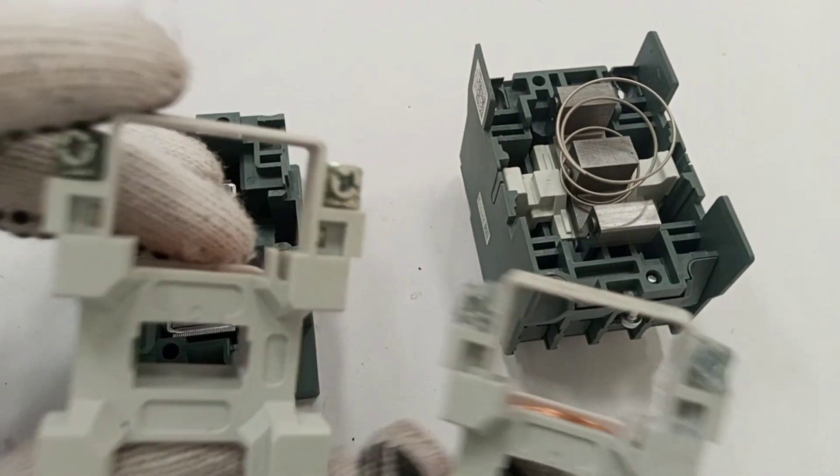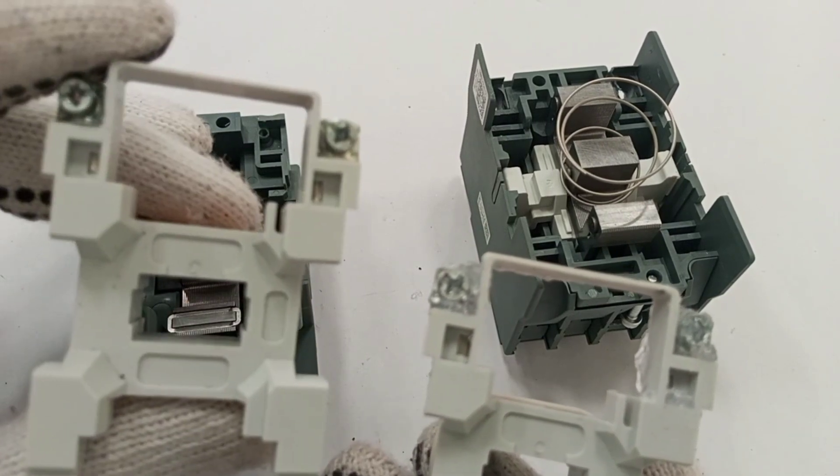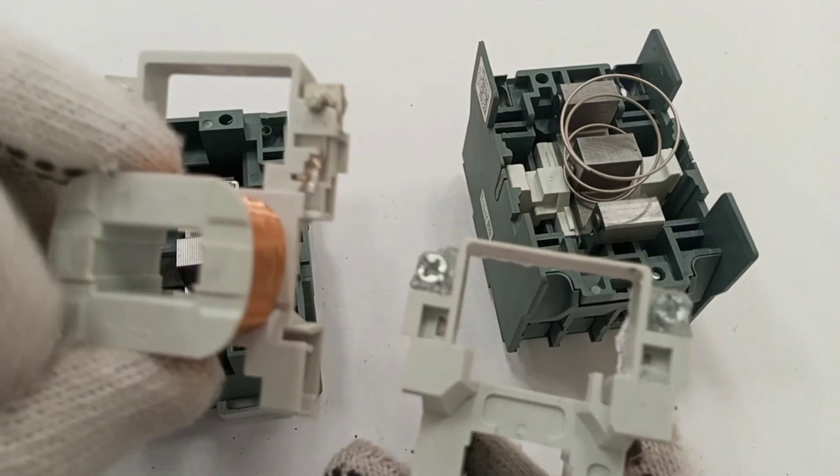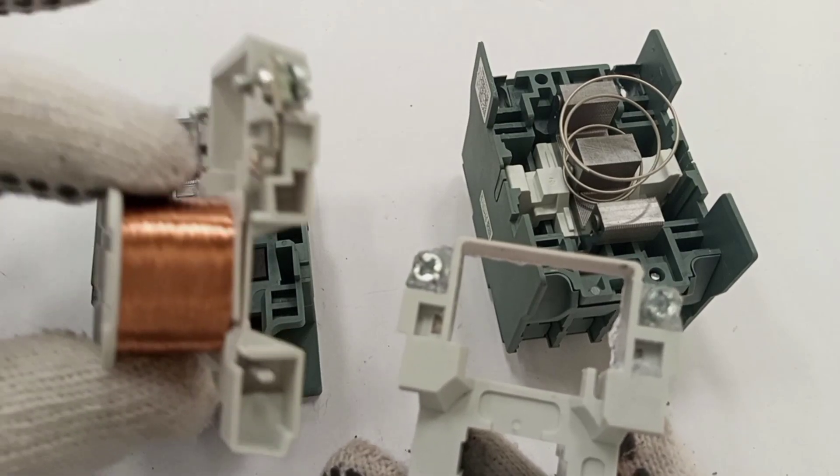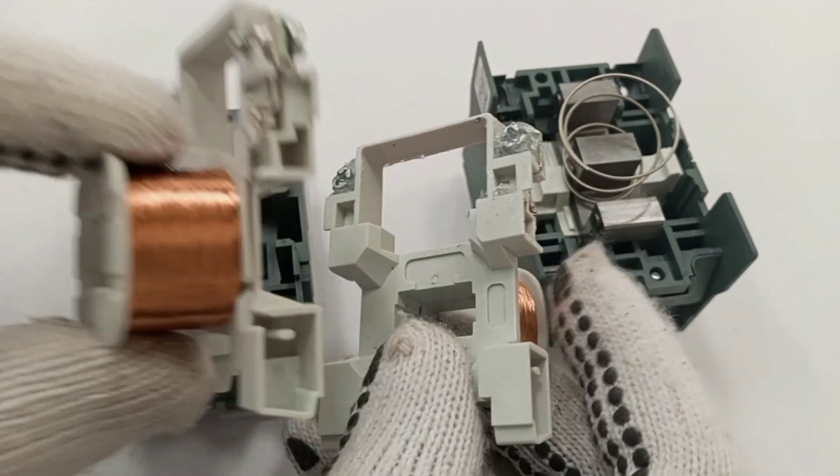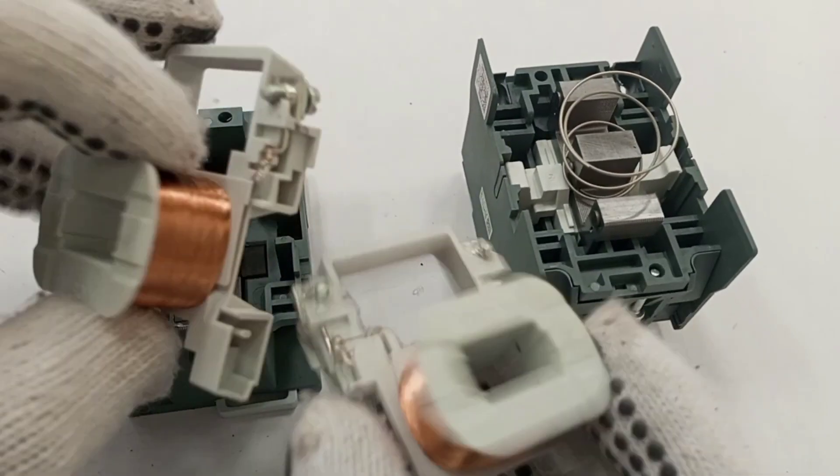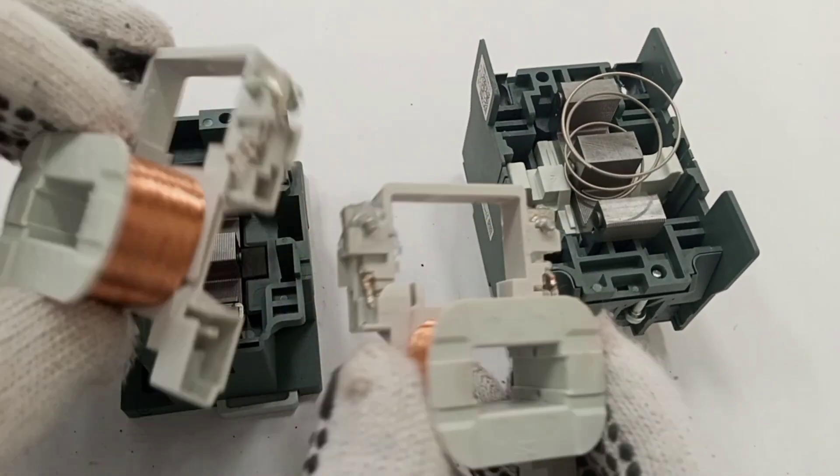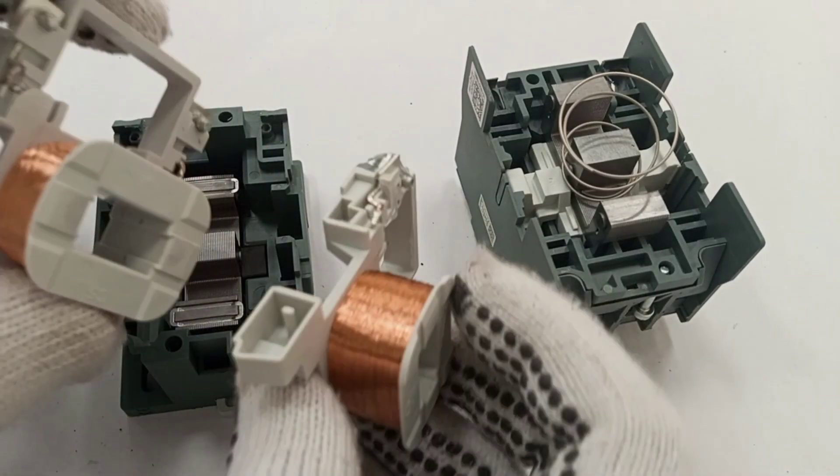Depending on the size of the contactor, the coils come in different shapes and different sizes. When you want to replace a contactor coil, it's best you do well to get the same size as the one you are replacing. Here I have the same size of the coil that I'm going to replace.